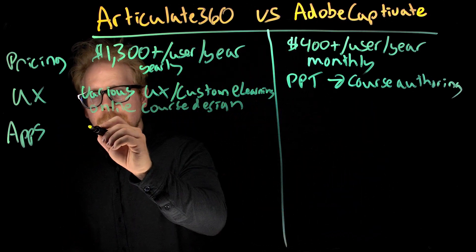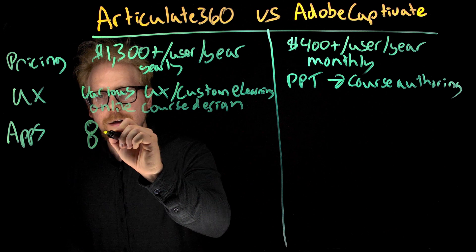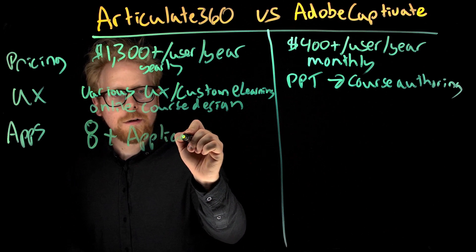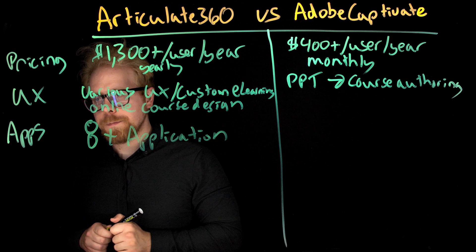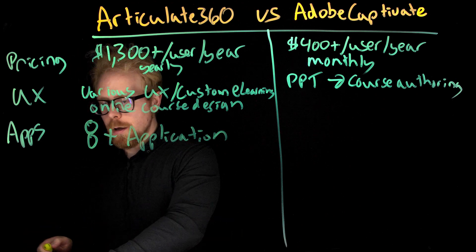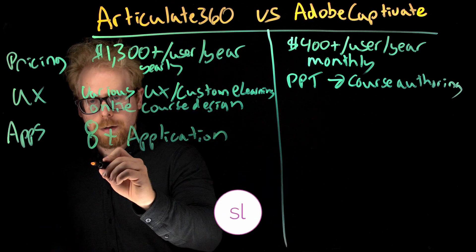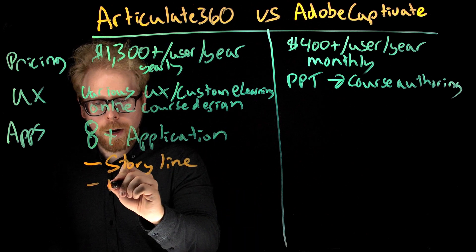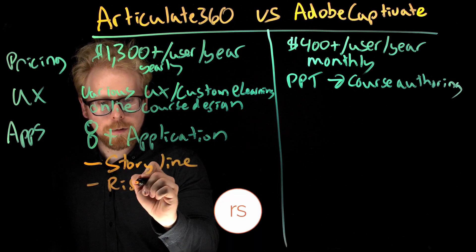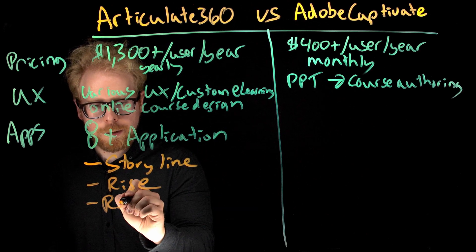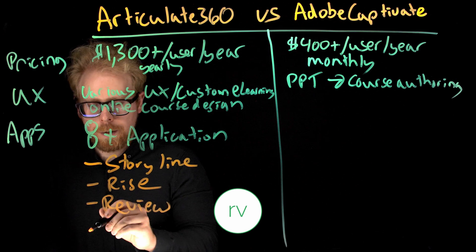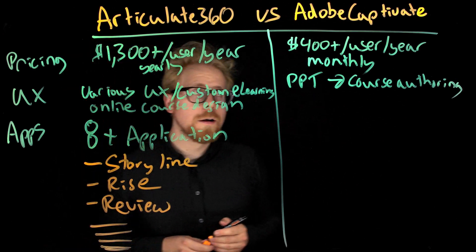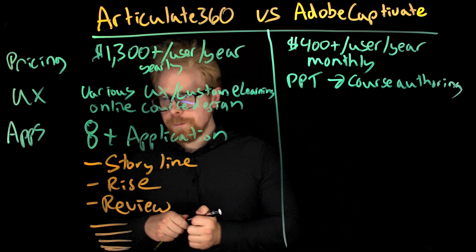Articulate 360 is eight-plus applications. The main ones are Storyline, Rise, and Review 360, and then a bunch more.